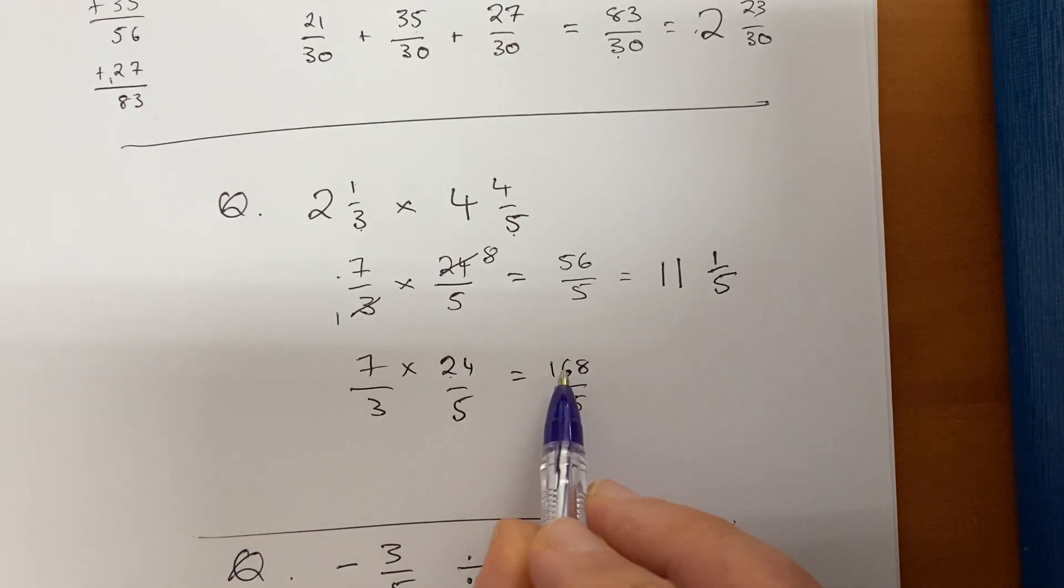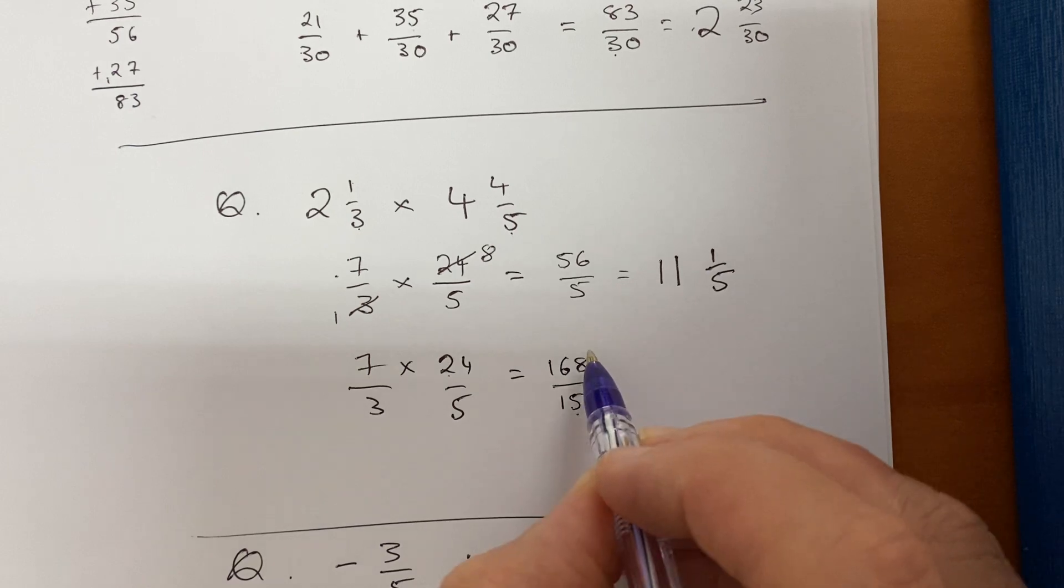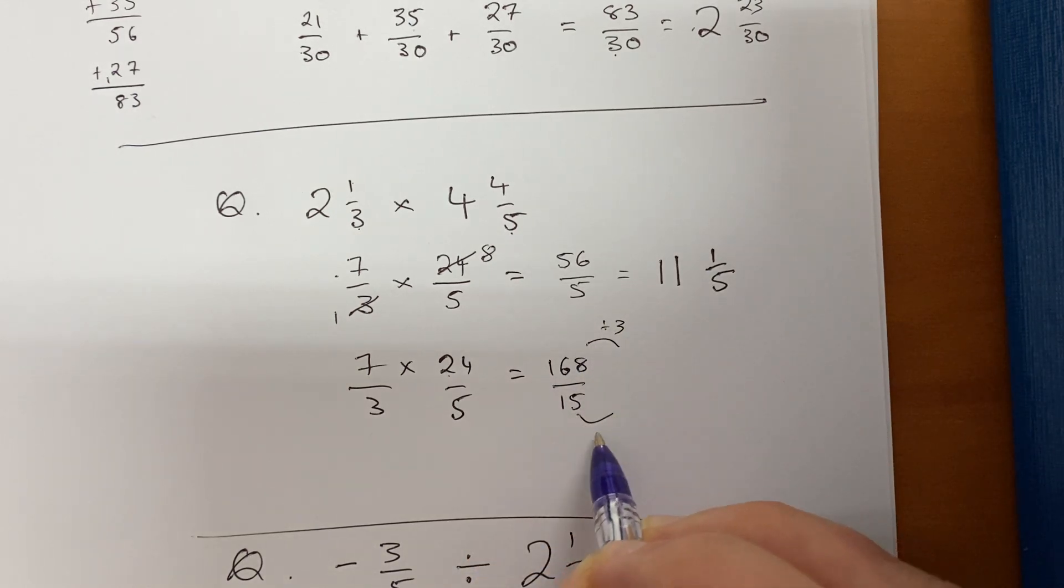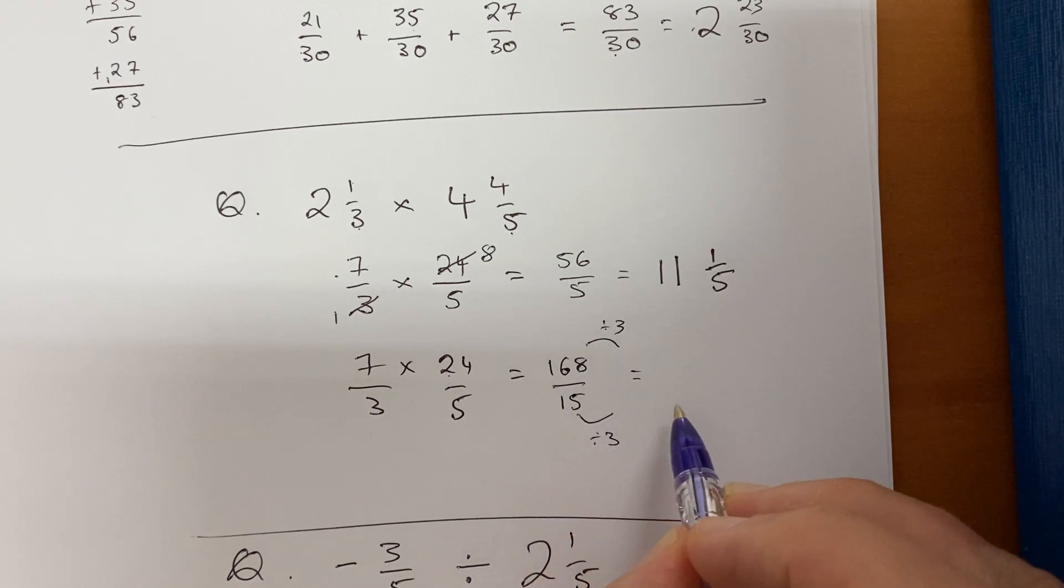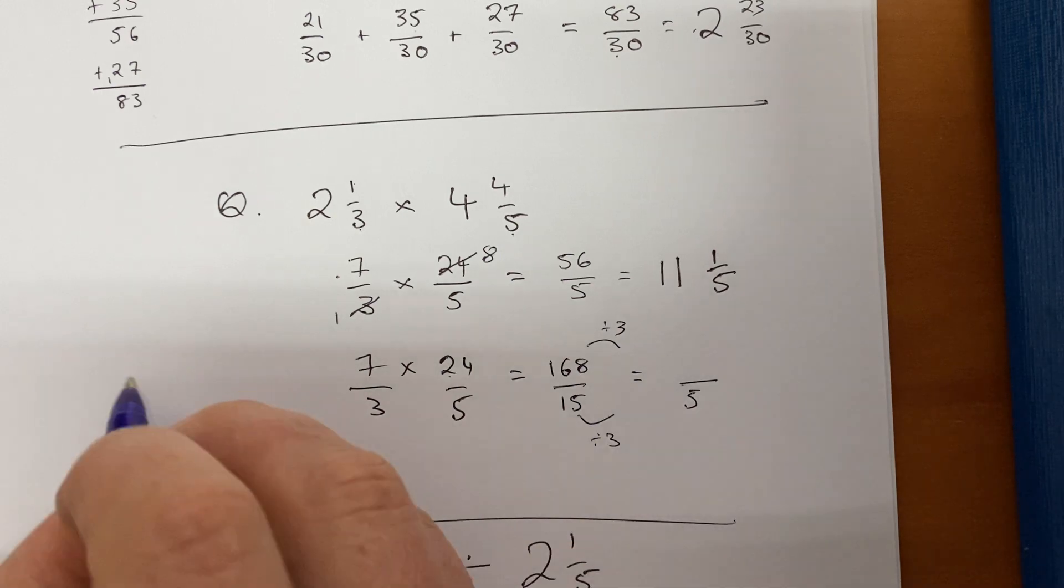Okay, so it's still difficult to simplify, but 15 is divisible by 3, and 168, 1 plus 6 is 7, plus 8 is 15, so that's divisible by 3 as well, so I can divide by 3 top and bottom to simplify the fraction.